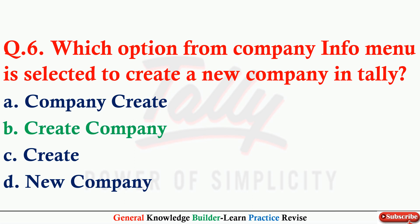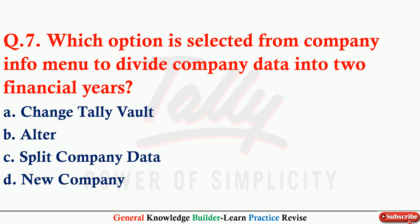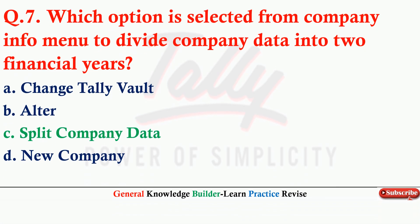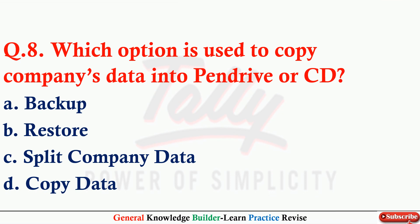Q6: Which option from the Company Info menu is selected to create a new company in Tally? Option B: Create Company. Q7: Which option is selected from the Company Info menu to divide company data into two financial years? Option C: Split Company Data.